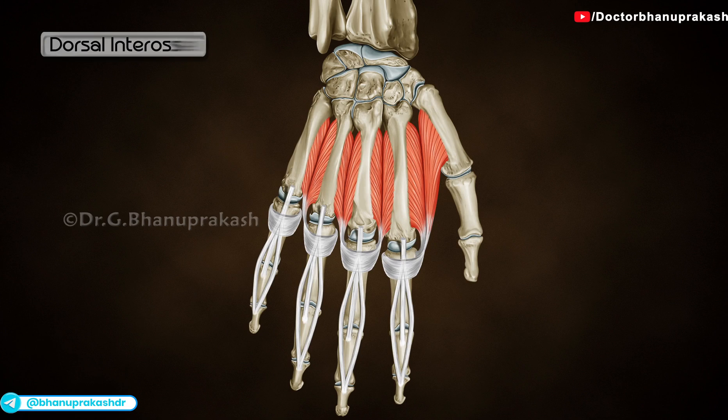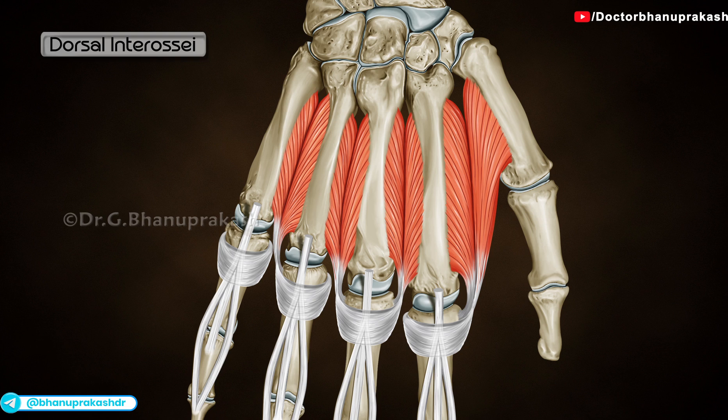Dorsal interossei. There are four dorsal interossei, from lateral to medial, numbered 1, 2, 3, and 4. All four are bipennate.